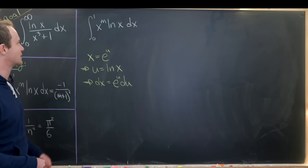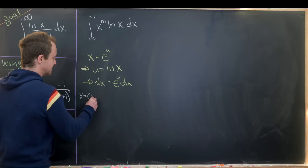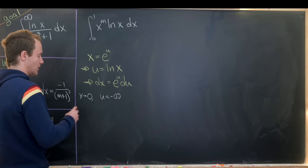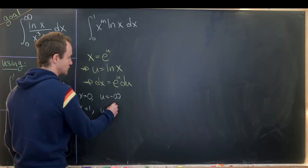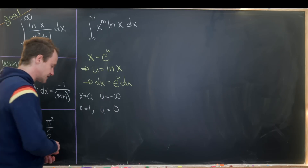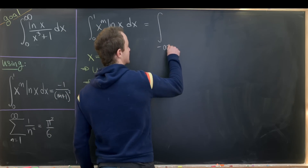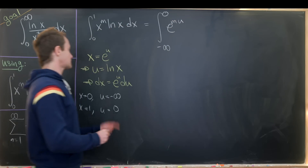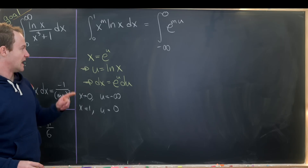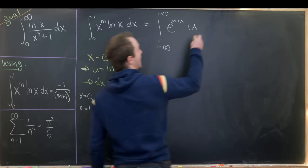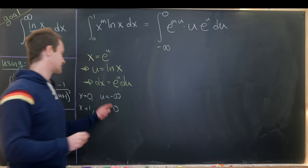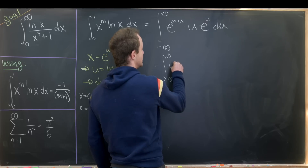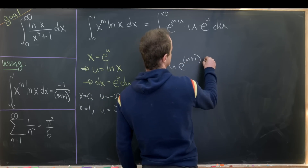That's kind of the start of our setup. When x equals 0, u equals minus infinity, taking into account the limiting behavior of the natural log. Furthermore, when x equals 1, u equals 0 because the natural log of 1 is 0. So now we can write this as the integral from minus infinity up to 0 of e to the mu times u times e to the u du — that's from e to the u to the m power times the natural log of x times this differential. Rewriting, this is the integral from minus infinity to 0 of u times e to the m plus 1 times u du.